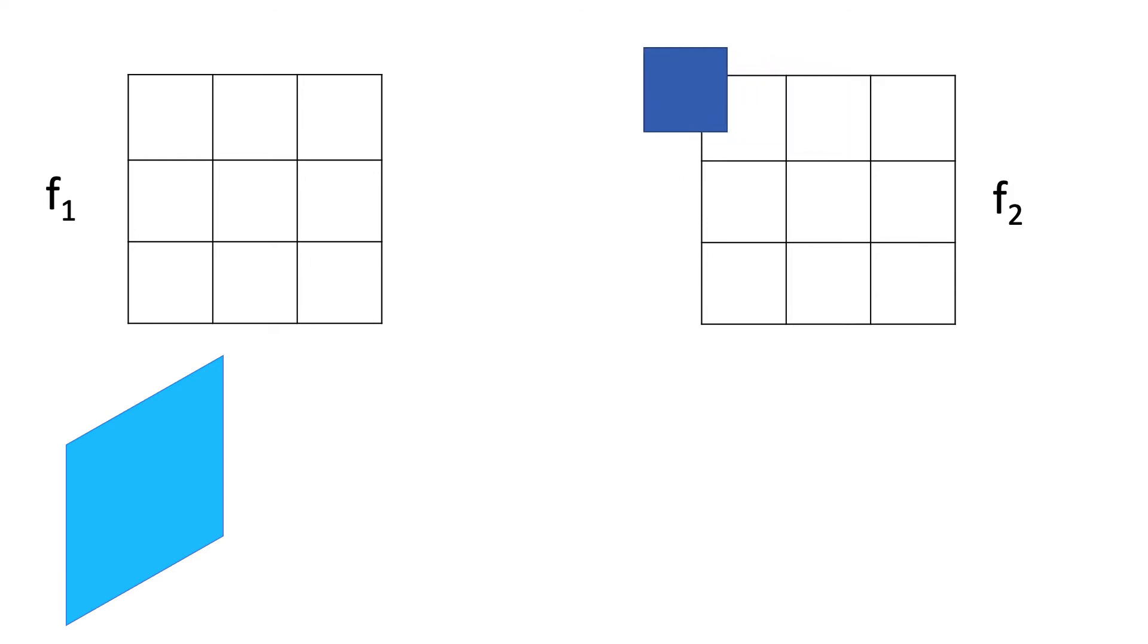Second pixel from f2 does the same operation and produces another 3x3 feature map. At the end, when all of the pixels from f2 have performed convolution with all of the pixels in f1, then the feature map with matching information is produced.